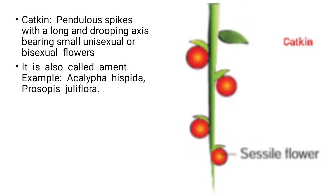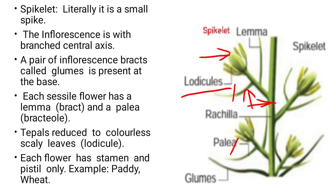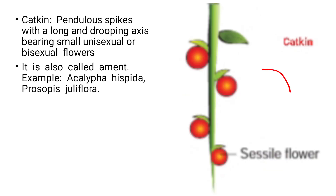Catkin is a pendulous spike — that is, the spike hangs downward. It possesses unisexual or bisexual flowers. Examples: Acalypha hispida and Prosopis juliflora.